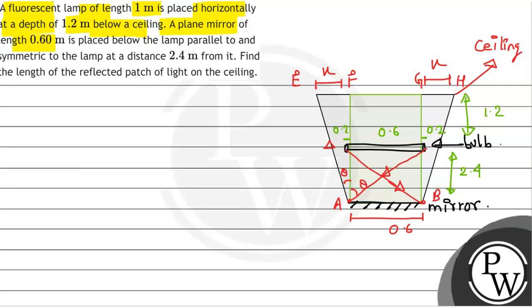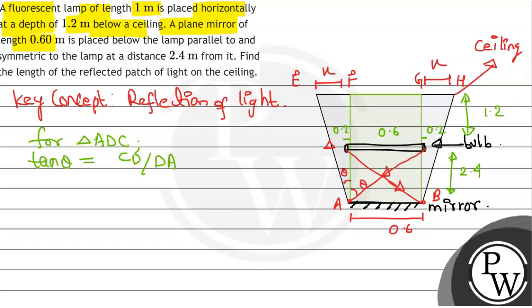So now for triangle, let's write the key concept first. Here it is a reflection of light. This is basically geometry. Tan theta equals CD over DA, which is 0.8 over 2.4, which equals 1 over 3. Let's take this as equation 1.